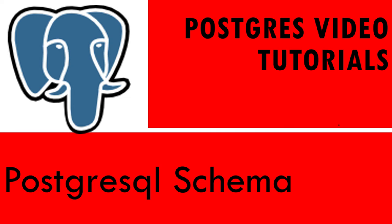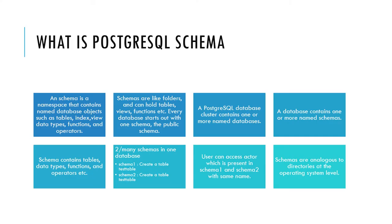Welcome to eMultiSkills video tutorial. In this tutorial we will learn what is a PostgreSQL schema. A PostgreSQL database cluster contains one or more named databases, and in turn a database can have one or more objects called schemas. Schemas can have tables or different types of objects — it is just a container which can hold different types of objects.